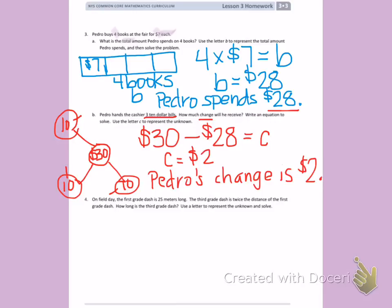Number 4: On field day, the first grade dash is 25 meters long. The third grade dash is twice the distance of the first grade dash. How long is the third grade dash? Use a letter to represent the unknown and solve.